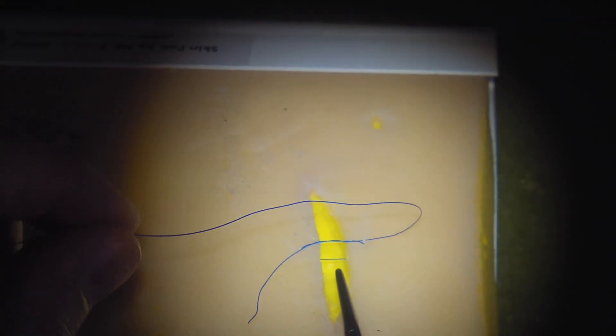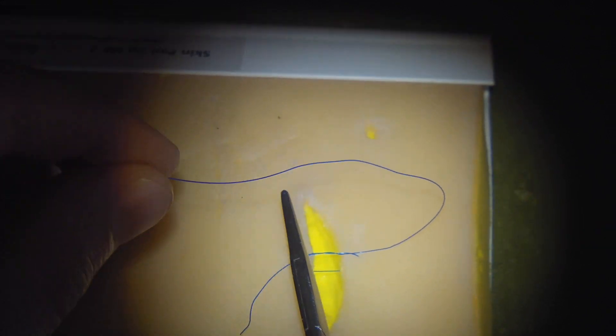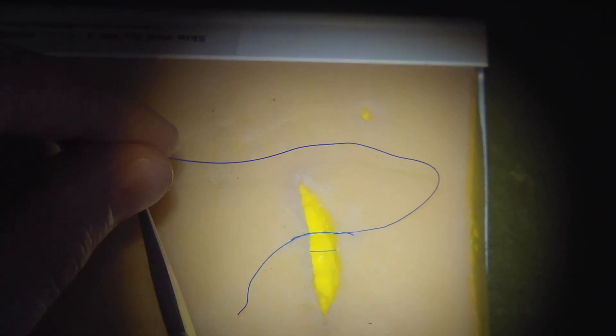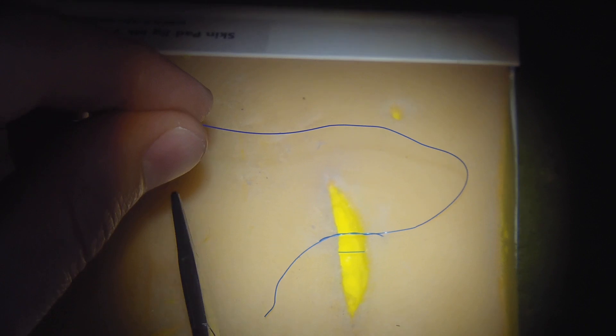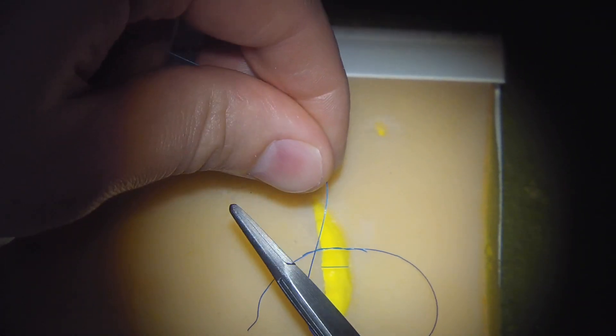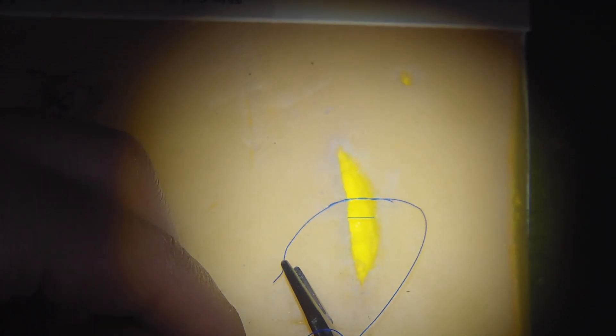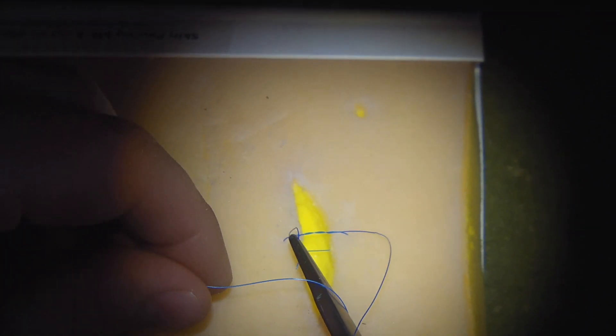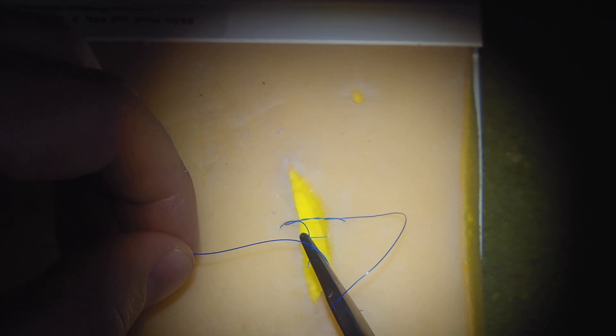So after we've taken the first two throws of our normal surgeon's knot, we then go in for our next throw within the arc of the two ends of the suture as normal. We put a needle holder in there, we take one throw, we grip the free end entirely as normal, and we pull it down.